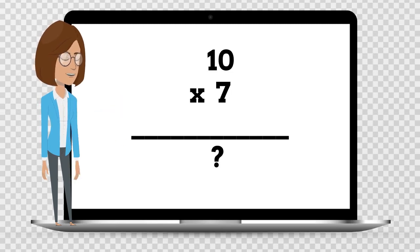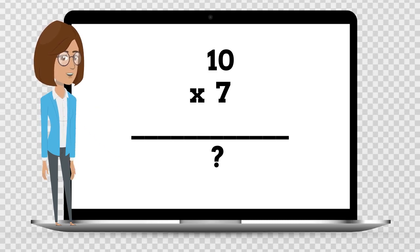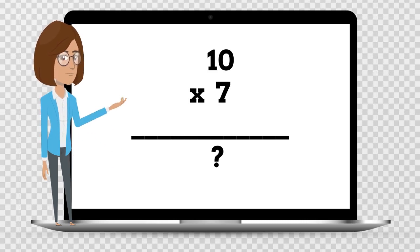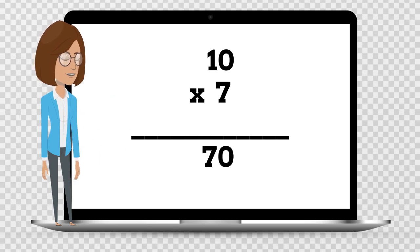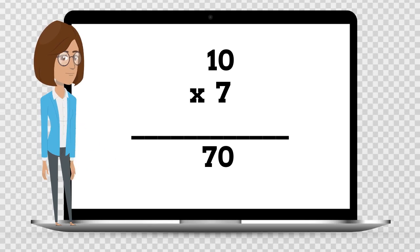10 times 7 is — say your answer out loud. 10 times 7 is 70.